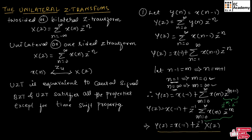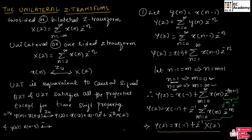This is very important — remember it as it is helpful to solve problems. Similarly, for Y of n is equal to X of n minus 2, we can get the unilateral Z transform as Y of Z is equal to X of minus 2 plus X of minus 1 times Z inverse plus Z to the power of minus 2 times X of Z. And for Y of n is equal to X of n minus 3, the unilateral Z transform gives Y of Z is equal to X of minus 3 plus X of minus 2 times Z to the power of minus 1 plus X of minus 1 times Z to the power of minus 2 plus Z to the power of minus 3 times X of Z.